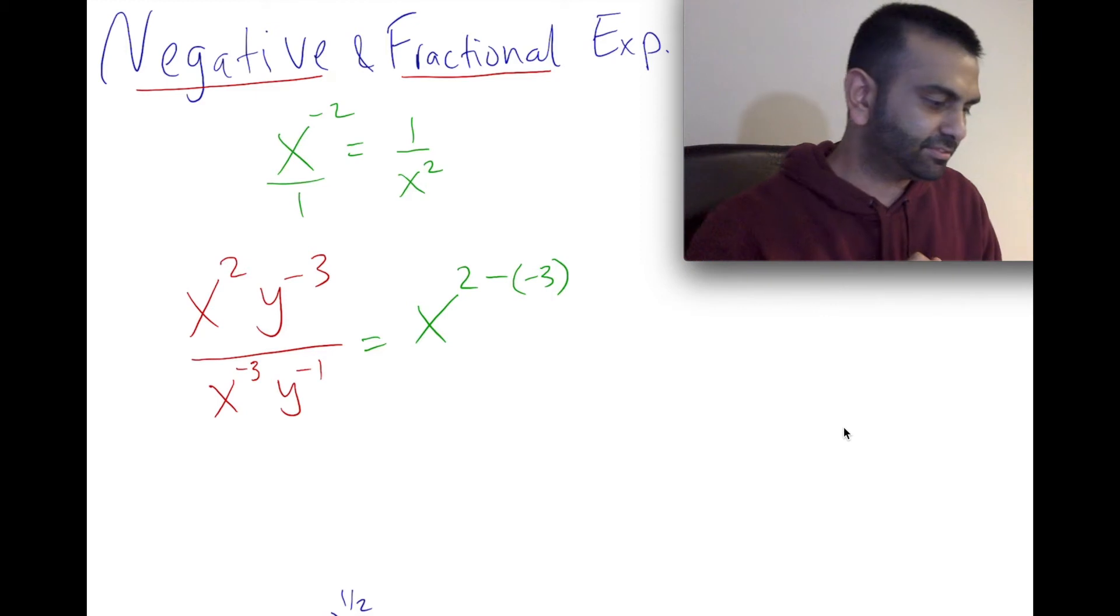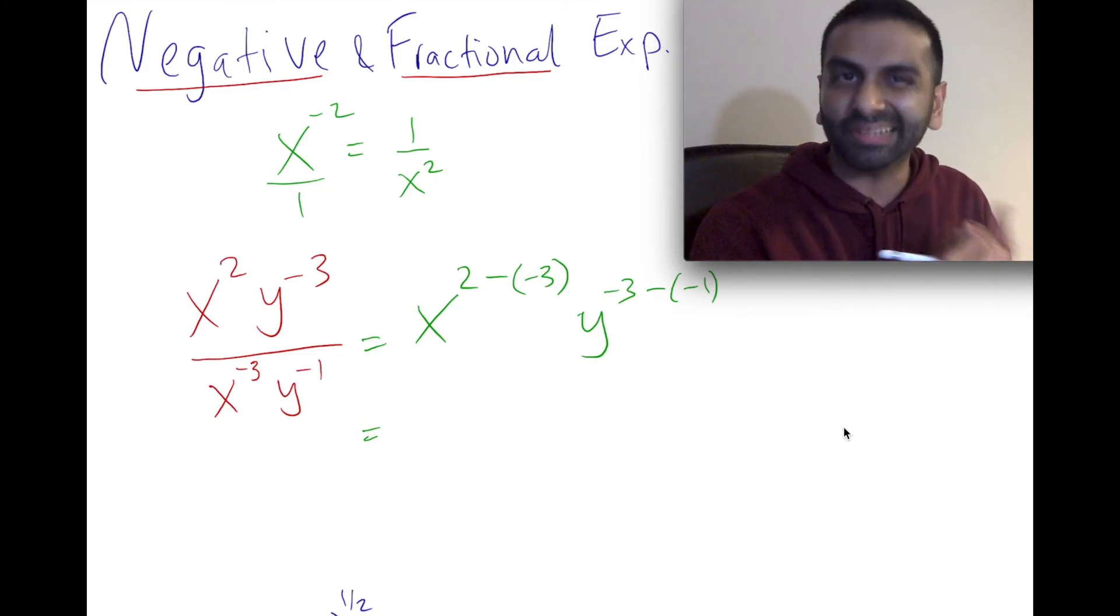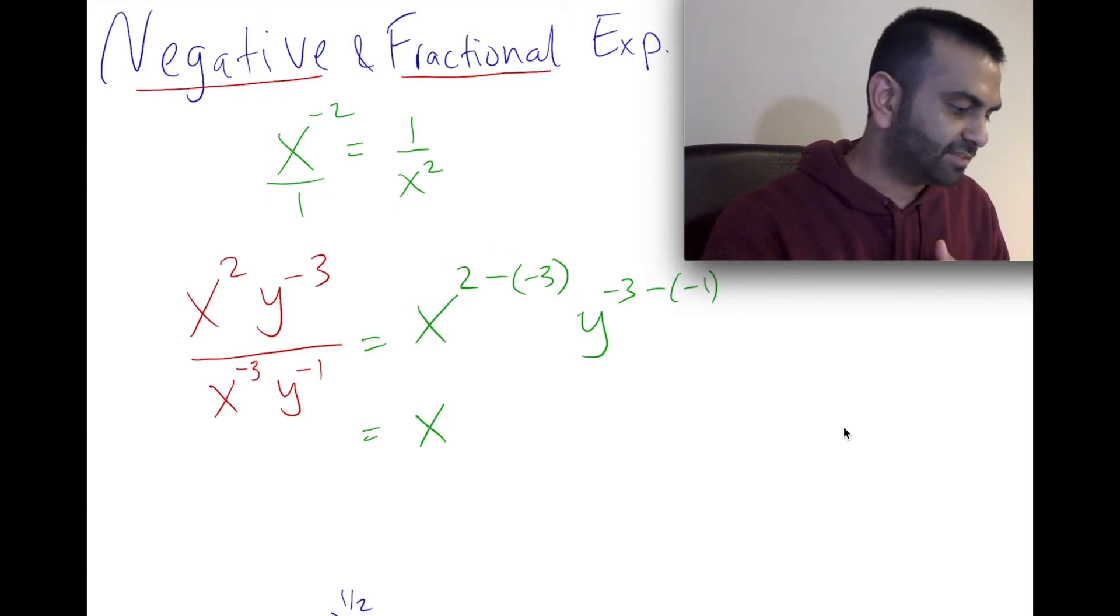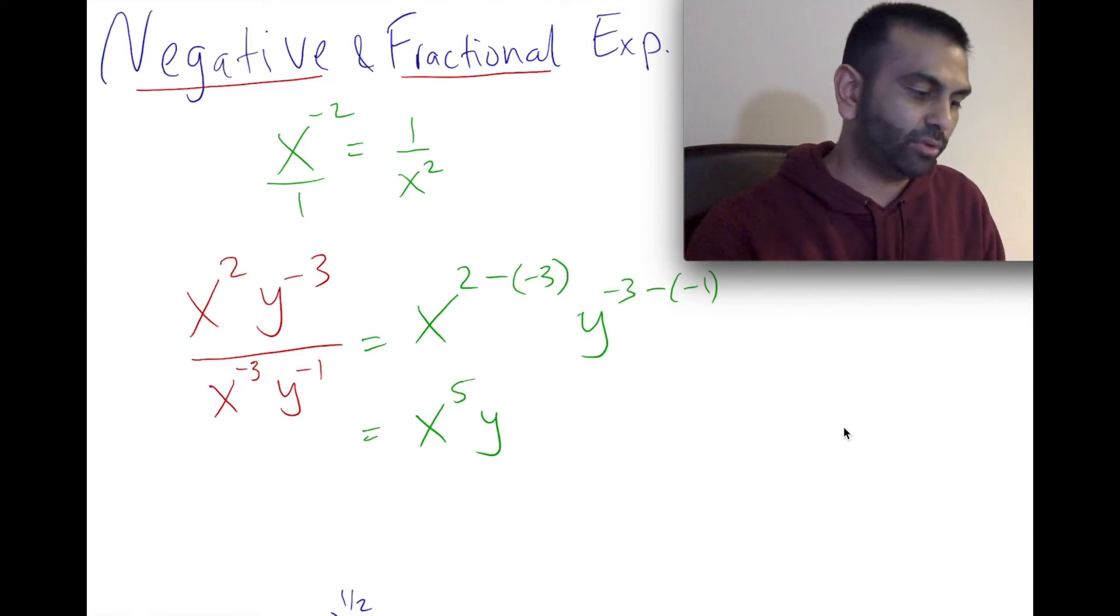And similarly with the y's, we could think about that the same way. There's a negative 3 here, y is a negative 3. But because we're dividing by this guy, we're subtracting that exponent here, but that exponent is negative, so we're subtracting a negative 1. We could simplify this now because 2 minus negative 3 is the same thing as 2 plus 3, which is 5, so that's x to the fifth. And that's y to the negative 3 minus negative is going to be plus, plus 1. And the negative 3 plus 1 is negative 2.